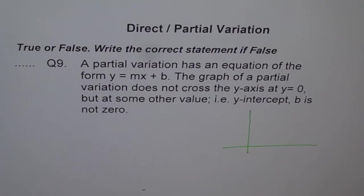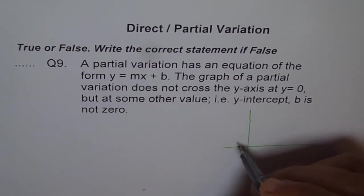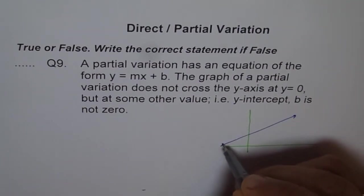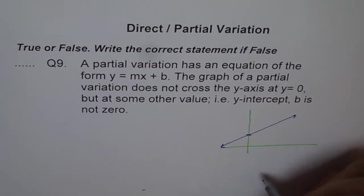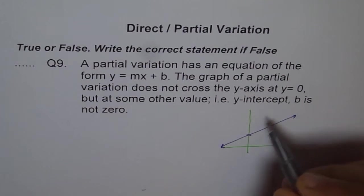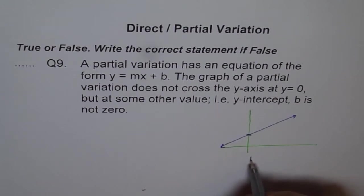So if I try to graph this line y equals mx plus b, it could be like this. Here, that is my y-intercept. And the line does not go through origin, the 0. Then it is a partial variation. So that is partial variation.